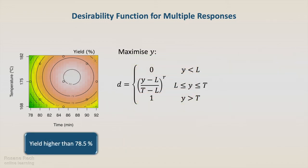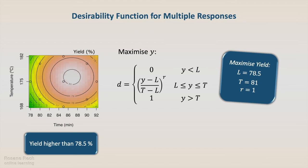For the yield higher than 78.5%, we are going to use the desirability function to maximize it, since it is a variable where higher is better. The threshold of 78.5 corresponds to the lower limit, since it is the minimum acceptable yield. For the target, I will define it as 81%, which is close to the maximum predicted value for the yield.